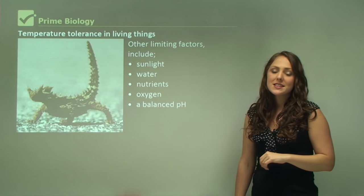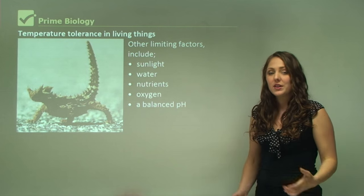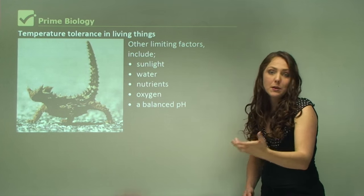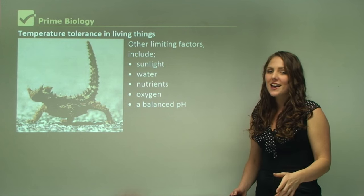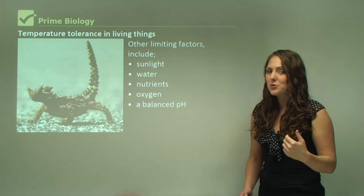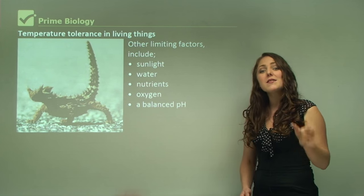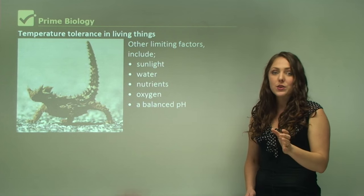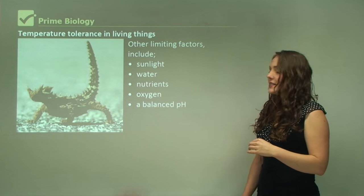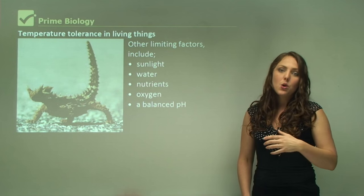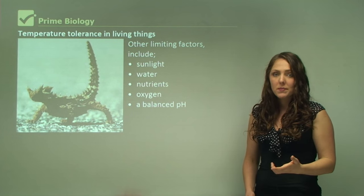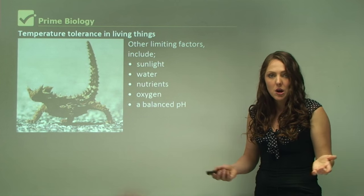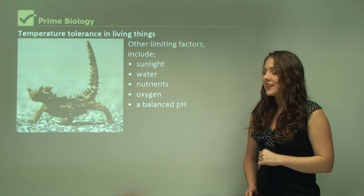A balanced pH environment is also important. For example, algae might grow on a pool if the pH is correct for that organism to grow. The same applies to us — we need a balanced pH environment; if you were to put acid in our environment, our skin would not be able to handle that.